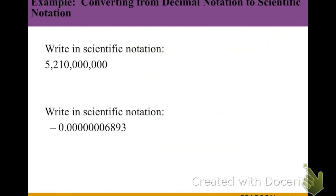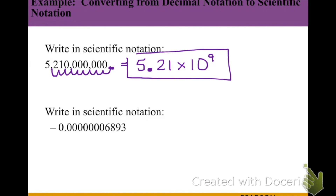The last topic is scientific notation, another way of writing large or small numbers. Scientific notation is always composed of a base greater than 0 but less than 10, times 10 to some power. In the first example, we move the decimal point until we get a number between 0 and less than 10 — in this case 5.21. We moved it 9 places, so we write 5.21 times 10 to the 9th. A positive exponent indicates a large number.